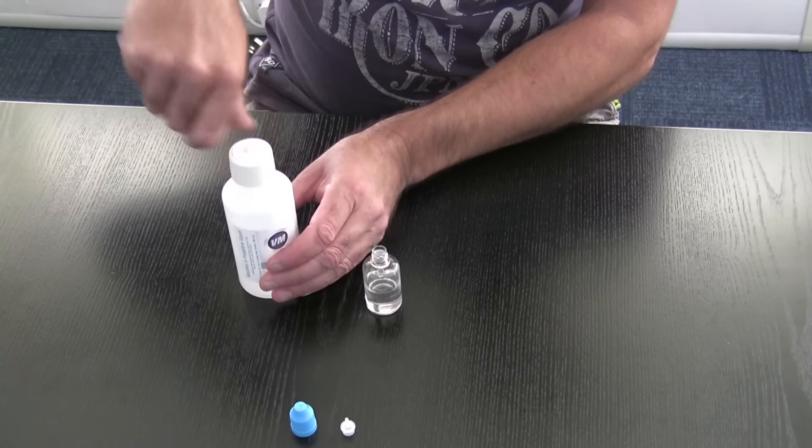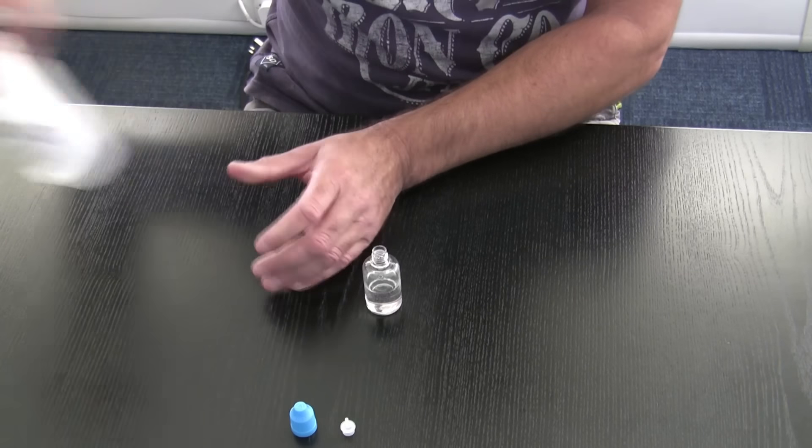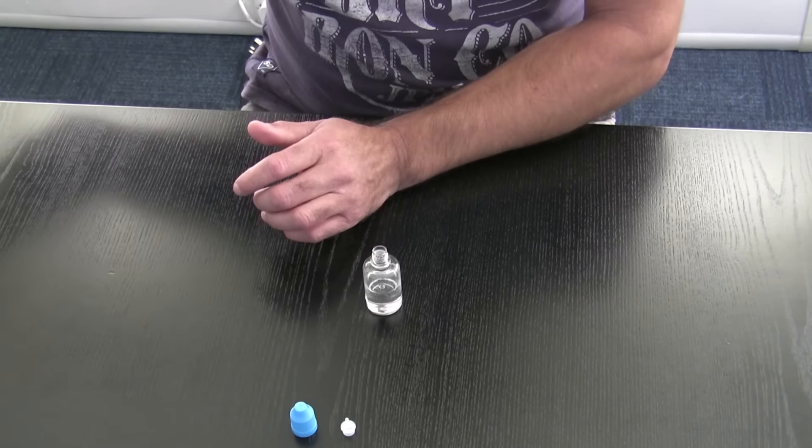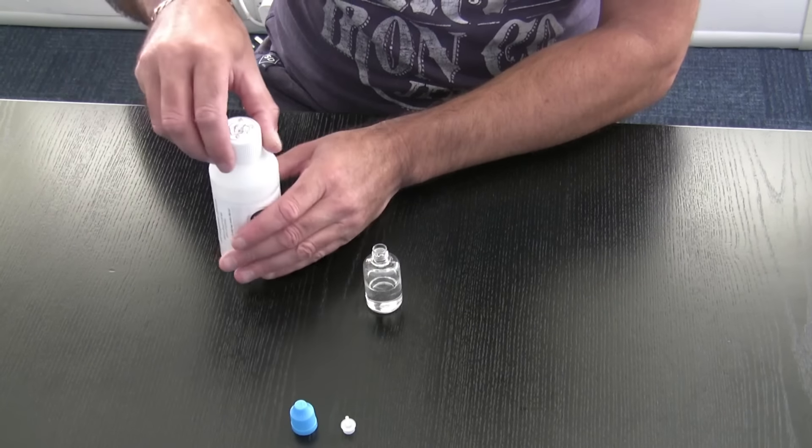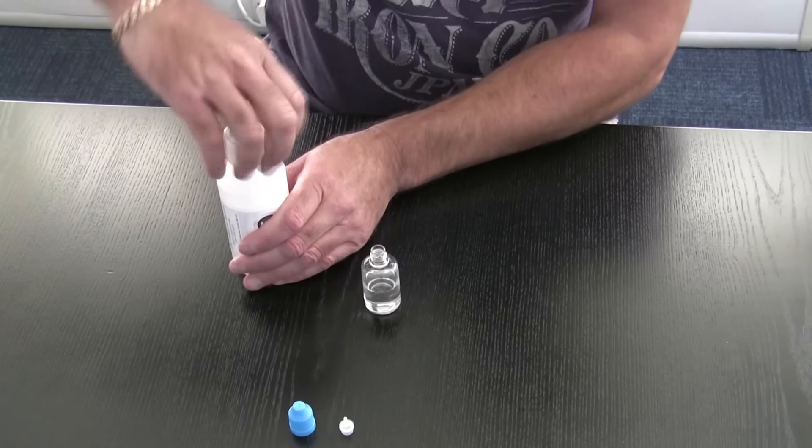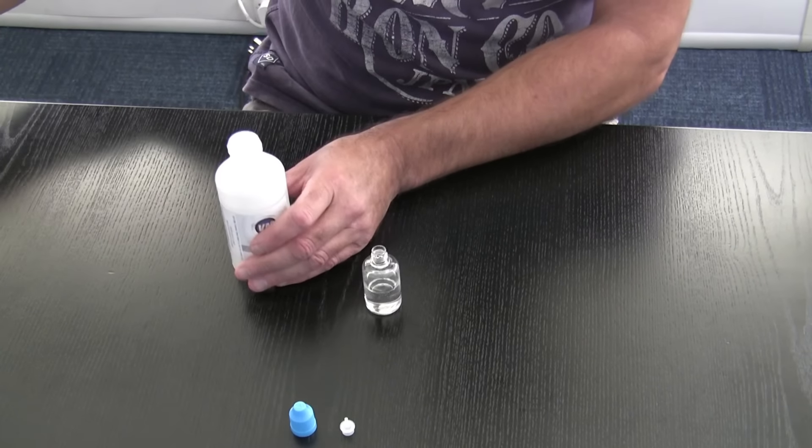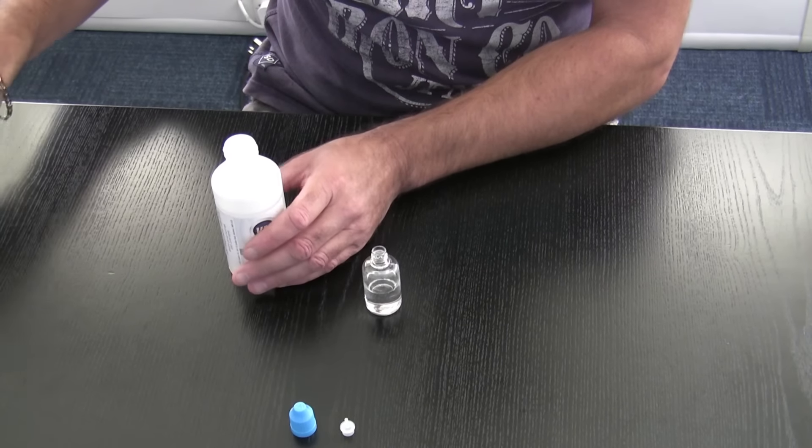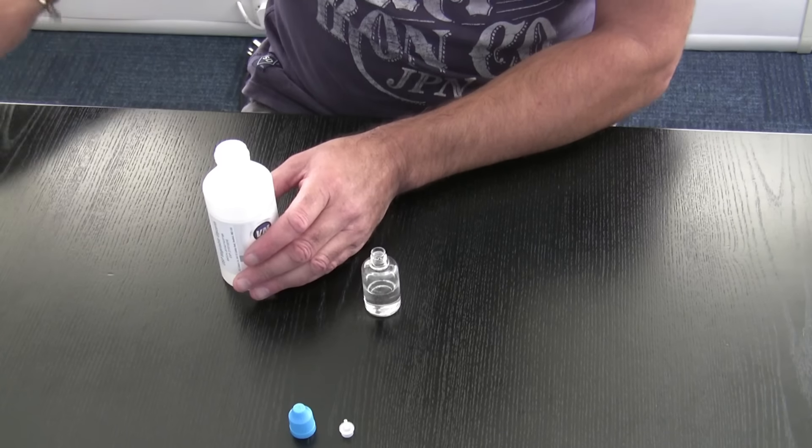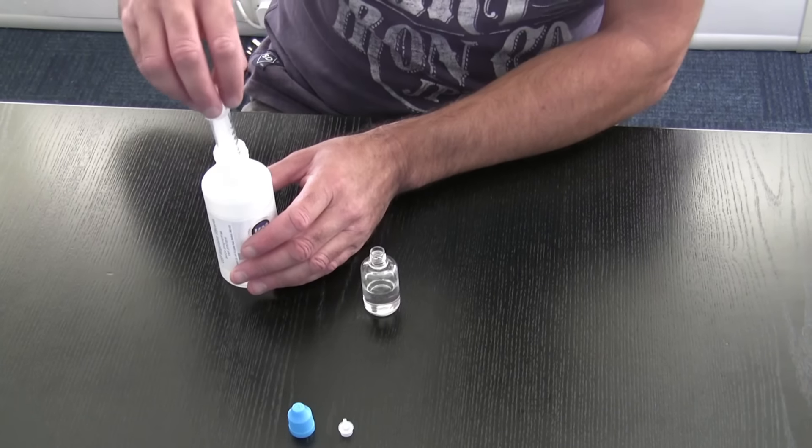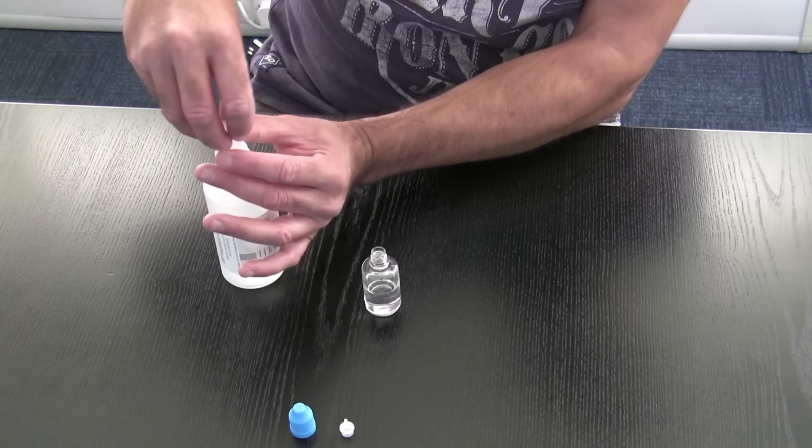Again, with the lid and get it out of the way. Now we have the VG. This stuff's a bit thicker. It's like syrupy texture to it, so it does take a bit of time to get it up into the syringe. We want 9ml, that's all.